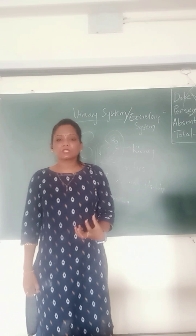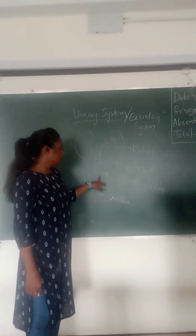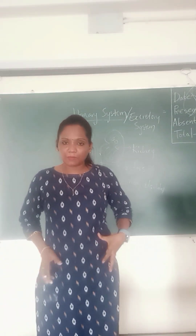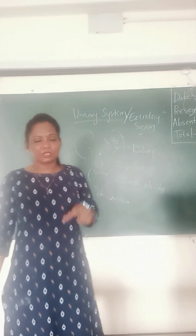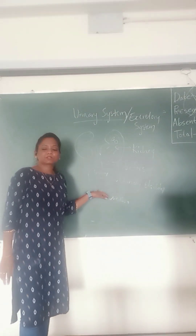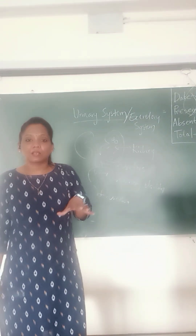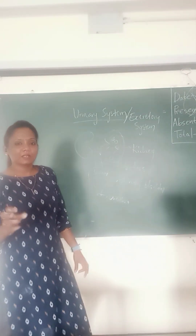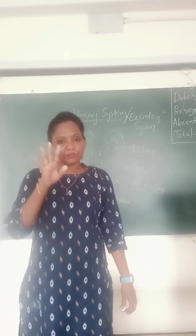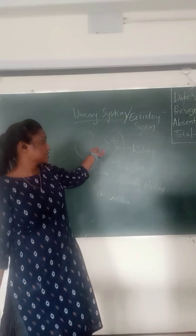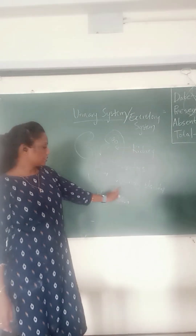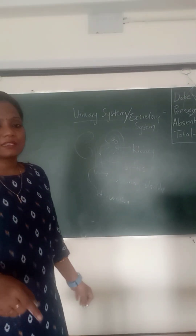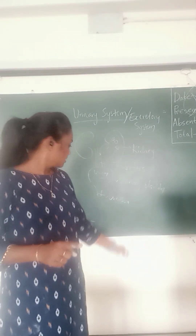From the ureters, the urine is collected in the urinary bladder, which just stores the urine. When the bladder is full and you get the impulse or sensation, then only it will expel — this is called voluntary control. The urethra opens the bladder to expel the urine out. These are the four structures in the urinary system: kidneys, ureters, urinary bladder, and urethra.